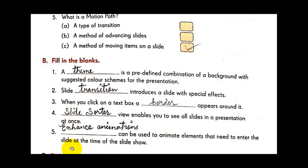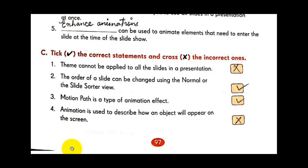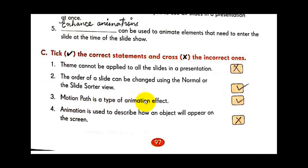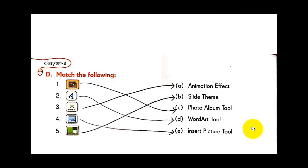Exercise C — tick the correct statement and cross the incorrect ones. 'Theme cannot be applied to all the slides in a presentation' — wrong, cross. 'The order of slides can be changed using Normal or Slide Sorter view' — correct, tick. 'Motion path is a type of animation effect' — correct, tick. 'Animation is used to describe how an object will appear on the screen' — cross.